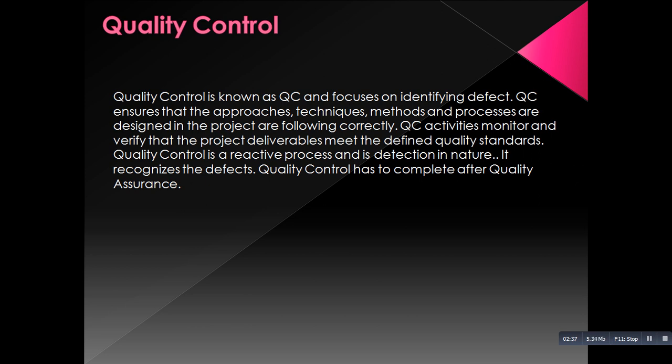Quality control contains a process called validation, which checks by executing the code. It is product-oriented or product-based, which means it carries out the process after the development of the product is done.